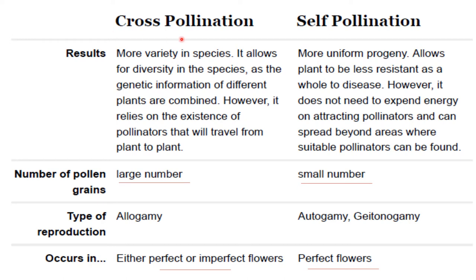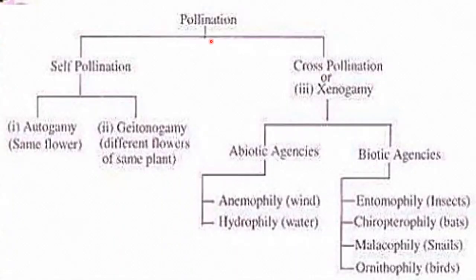The type of reproduction in cross pollination is allogamy, whereas in self pollinated crops it could be autogamy or geitonogamy. Cross pollination occurs in either perfect or imperfect flowers, whereas self pollination is seen in case of perfect flowers.